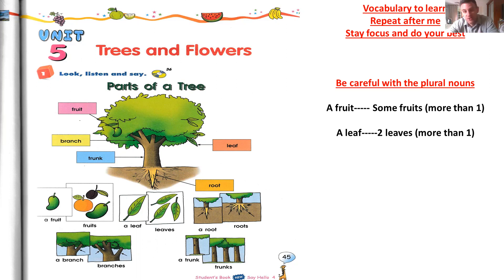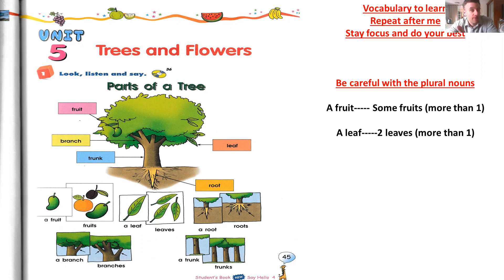You can check on Google Translate to understand easily what each word means. Be careful: a fruit, some fruits — don't forget to pronounce the S at the end of the word, and when you write in English, don't forget to write it: a fruit, some fruits. But be careful, sometimes you have irregular ones, like a leaf — two leaves. More than one, but with a difference.